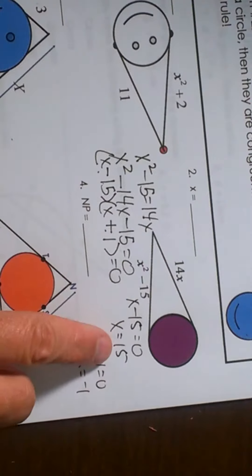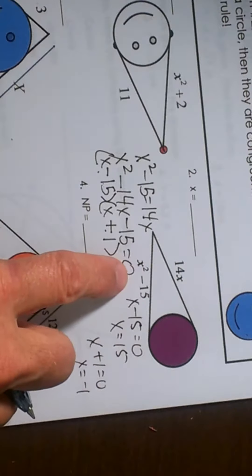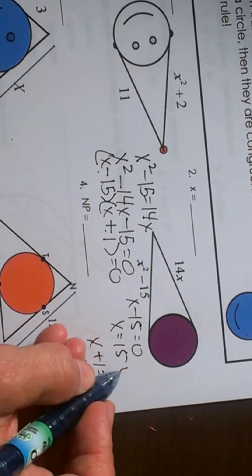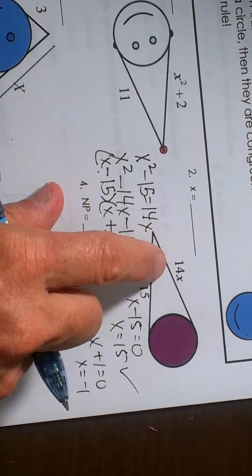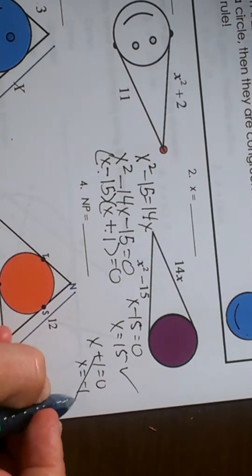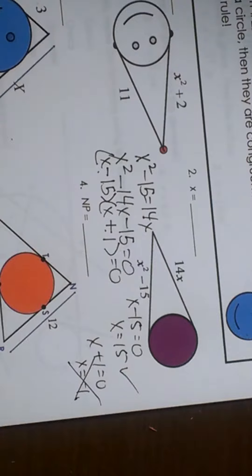Let's make sure those work. Okay, positive 15. If I plug a positive 15 in both spots, I get positive answers. So that's a good answer. Let's try plugging in the negative. If I plug a negative in here, I get a negative 14. I can't have a negative length, so I have to throw that answer out.